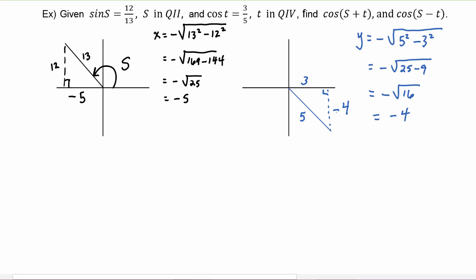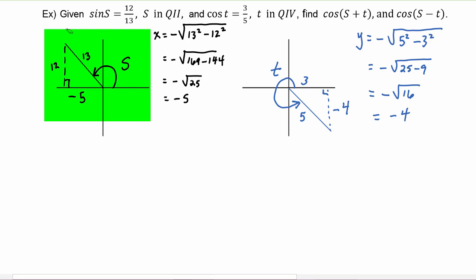Once you've done enough right triangles, you may notice that this is a Pythagorean triple — a three-four-five triangle — and you're welcome to use that and go right to knowing that this leg was four. We label angle t in the picture. Now we know all the sides for angle s and angle t, and we can use the identities we just learned to find cosine of s plus t and cosine of s minus t.